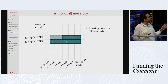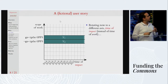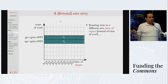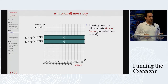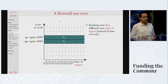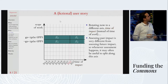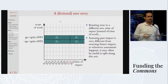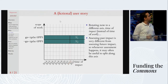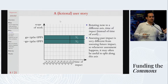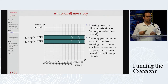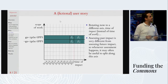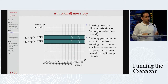Rotating now from the time of work axis into a different axis — the time in which impact is realized — by default both hypercerts cover the entire scope of time. But assessing past impact is about observation, while future impact is more about prediction; there are completely different sources of uncertainty and methodologies. So it's often useful to split hypercerts along the time of impact axis, separating past from future impact and assessing them separately. And because the times at which assessments happen are not fixed up front, it's valuable to perform these splits dynamically in the future.